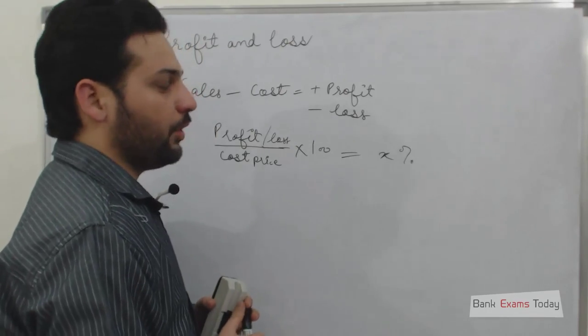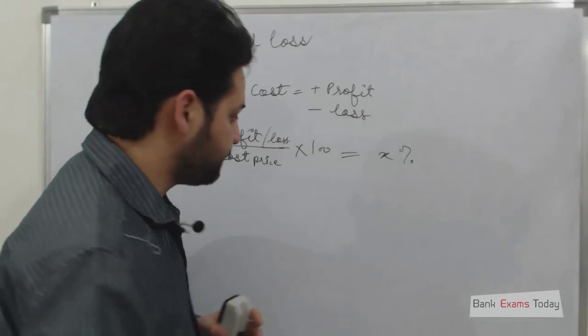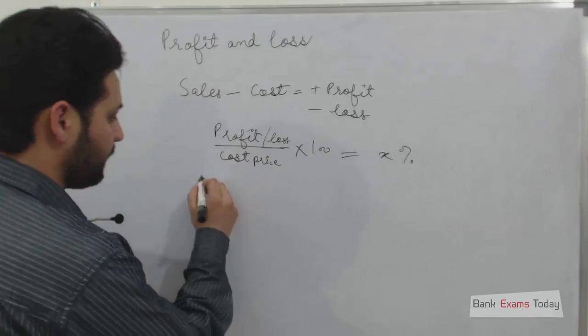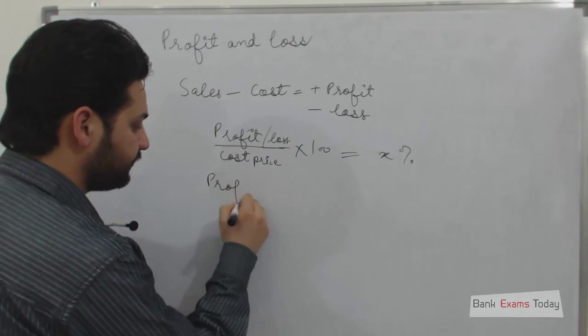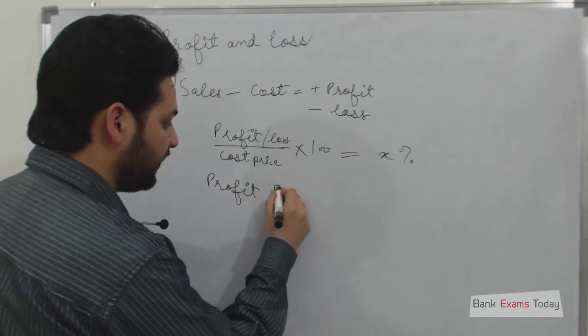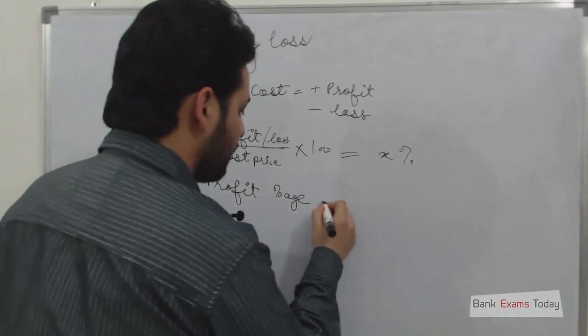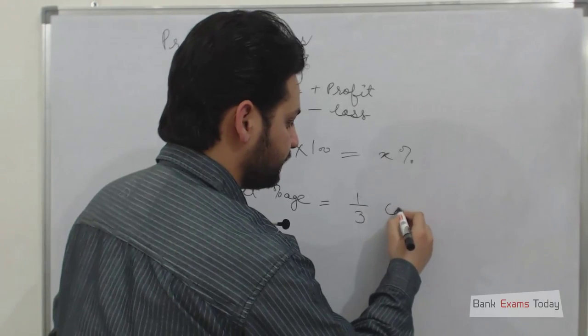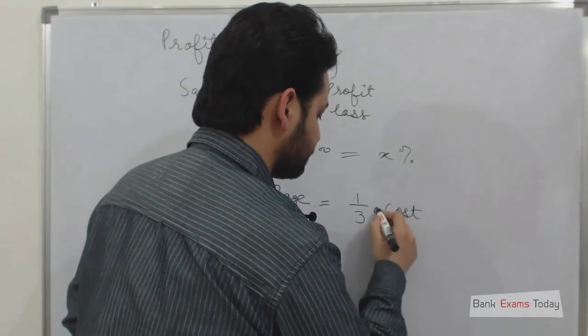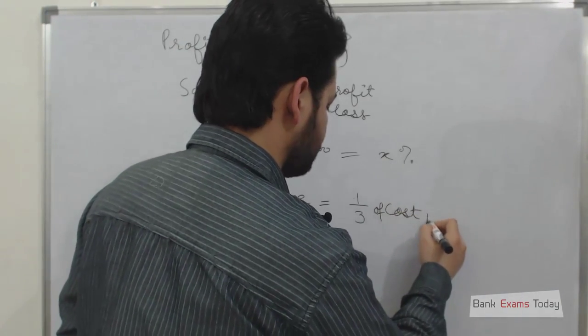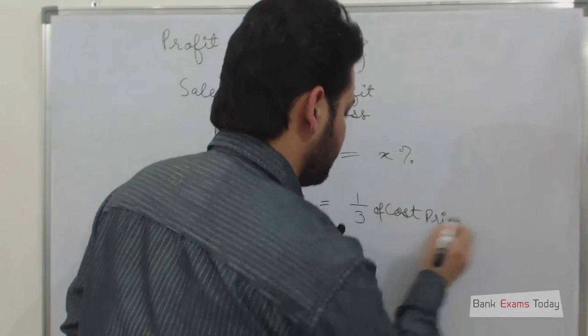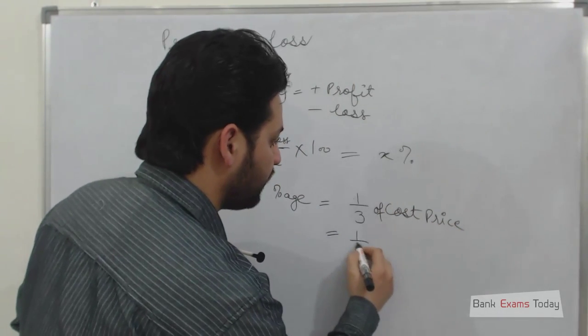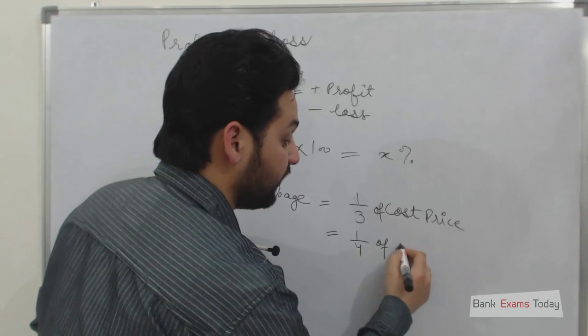One of the very important points in this chapter is, in case profit percentage is one third of cost price, so it will be equal to one fourth of selling price.